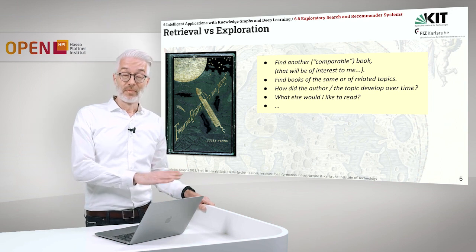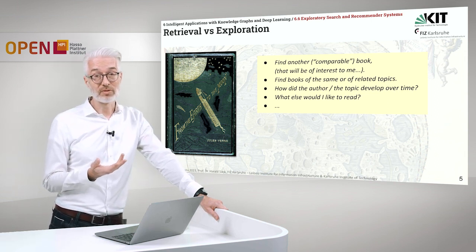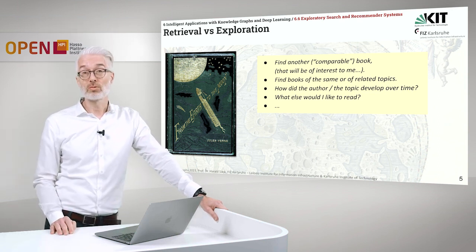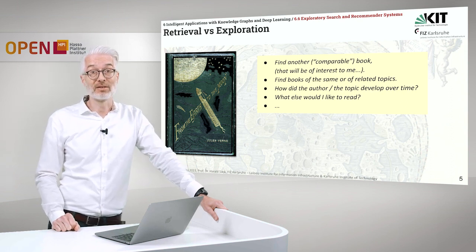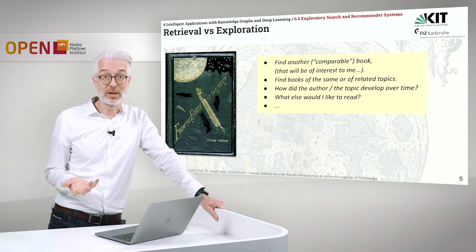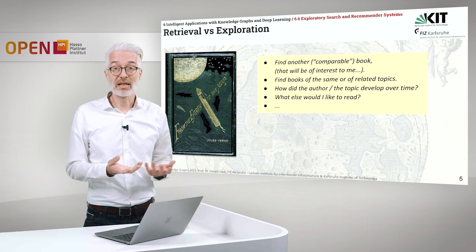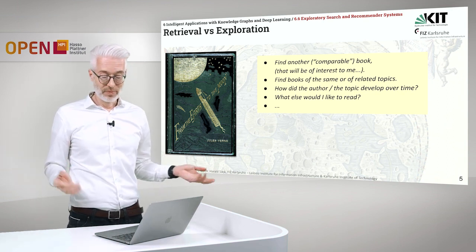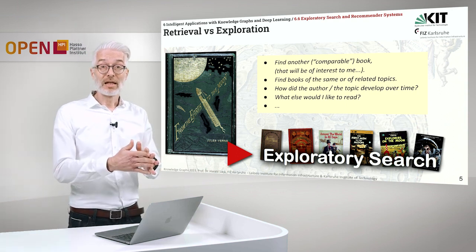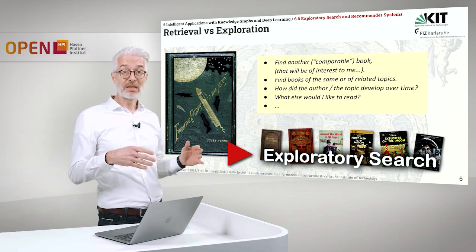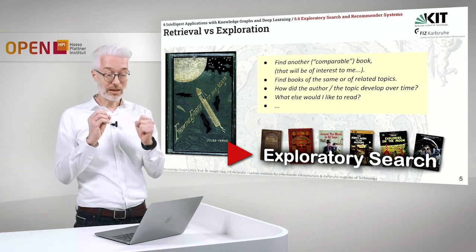However, this is retrieval — exploration is a bit different. Your next question might be: how can I find another comparable book that will be of interest to me? You've read that book, so what will you read next? Or the book is checked out, so you have to find something else that pleases you — a comparable book, books of the same topic or related topics. You want to know how the author developed the topic over time, and have interesting recommendations that reflect your likes, guiding you through the huge search space to explore it in a way that pleases you. That would be exploratory search.